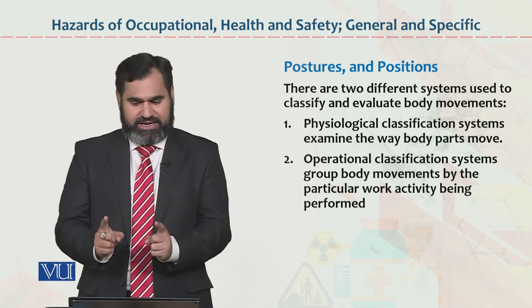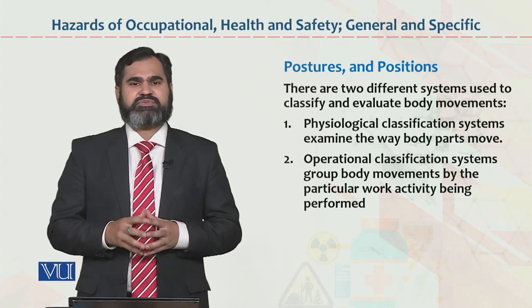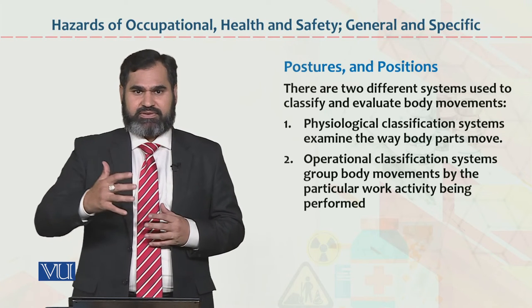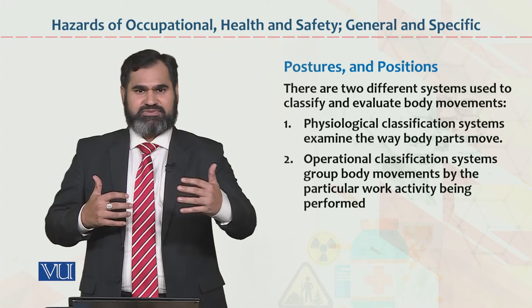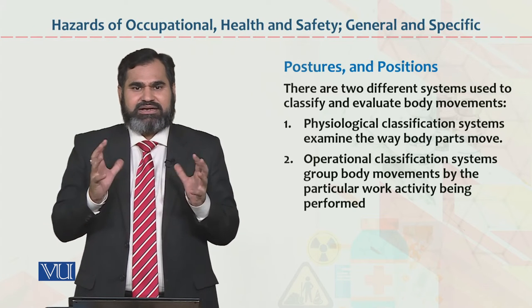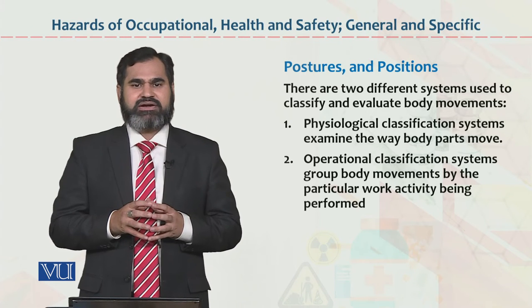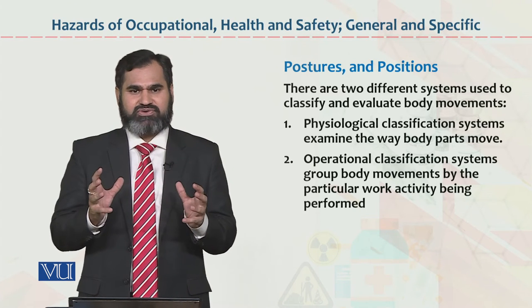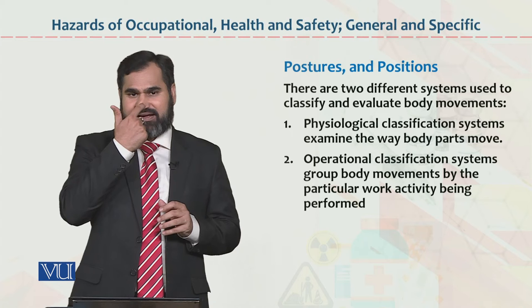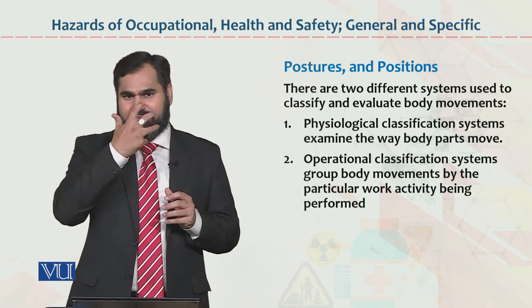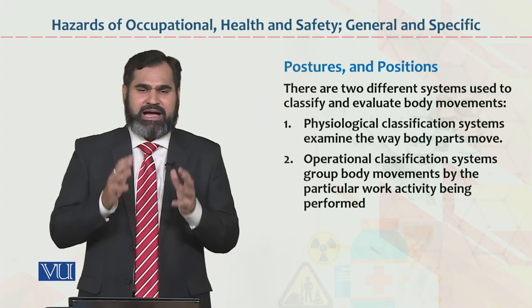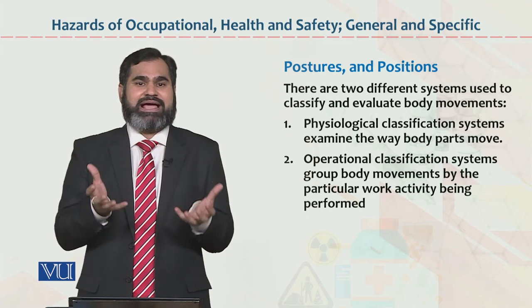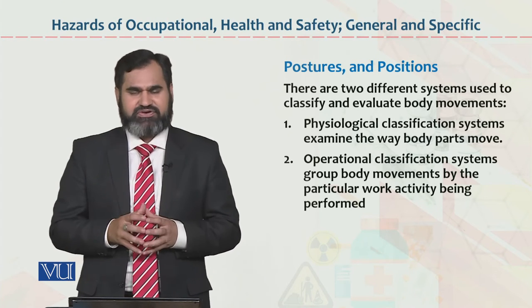Physiological classification mein hum dekhte hain ki yeh kaisa system hai jis mein hum examine karte hain the way body parts move. Mere haath ki movement ho rahi hai — ki kis tarah ek normal banda behave karta hai, normal banda apni movement se body ko dekhta hai, observe karta hai, ya parts ke upar kis tarah uska control hota hai — for example, mein yeh khar raha houn. Yeh ek part of body hai jis ki specific movement hai. Question bahut important hai ki aapka apne parts of body par control hai ke nai. Is cheez ko hum bolte hain physiological classification.